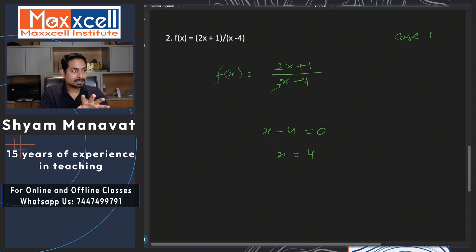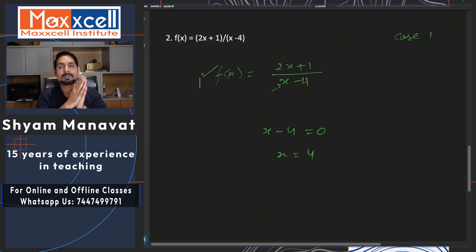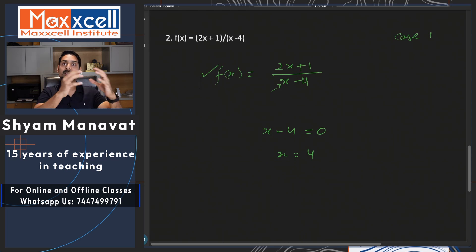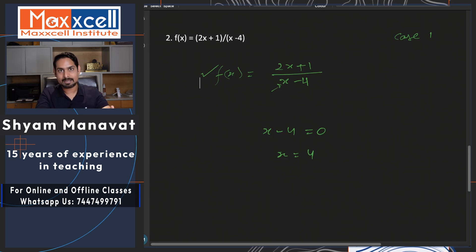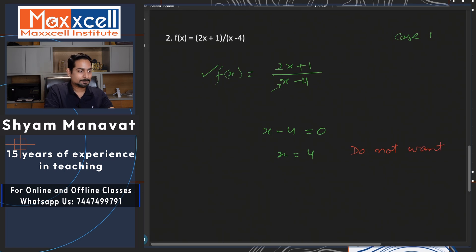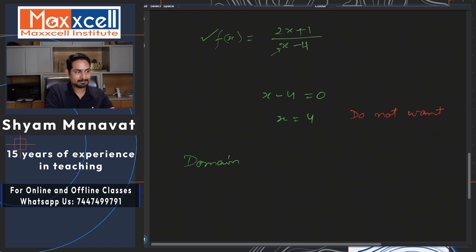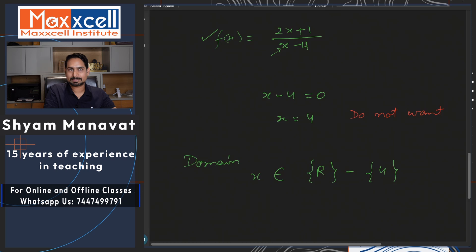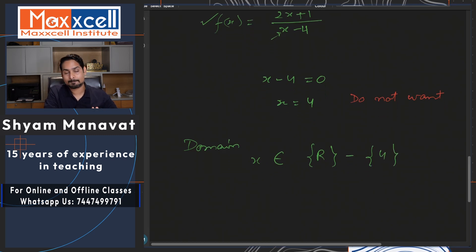If you keep exploring all the values for which the function is defined, you get so many. That is why I advise students to go the other way — think of the possibility where the function is not defined. For x equal to 4, the function is not defined, so this we do not want. The domain is all real numbers except 4. All real numbers are possible, only we must not have 4 there, otherwise the denominator becomes 0 and the function becomes infinite — not defined.